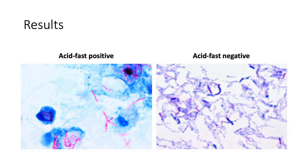These are your expected results. For acid-fast bacteria, they should stain pink to red, while for acid-fast negative bacteria, they should stain blue.